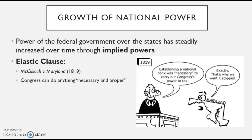In 1819, in the case of McCulloch v. Maryland — a foundational case for the AP Gov exam — the state of Maryland was trying to tax the Bank of the United States situated in Maryland. The Supreme Court ruled that having a national bank was necessary to carry out Congress's power to tax, and as a result Maryland is no longer able to tax the bank. This allows Congress to do anything that's necessary and proper, which is very vague, and that is going to significantly expand the power of the national government.